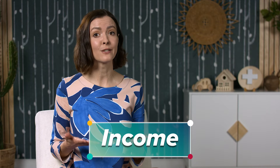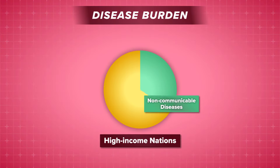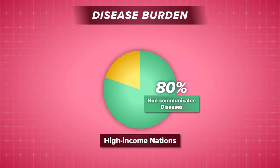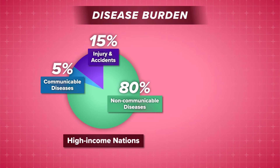We see this pattern reflected in countries' burden of disease, which is a measurement that reflects the estimated years of life lost from early deaths, injury, and illness from disease. In high-income nations, non-communicable diseases generally account for around 80% of the disease burden, while communicable diseases tend to make up somewhere around 5%. That last 15% is made up of things like injury and accidents.